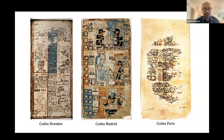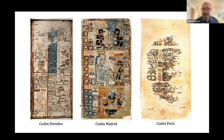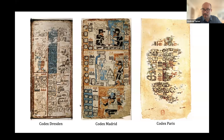Of the three books, the Codex Dresden is probably the finest. It suffered some damage during World War II but contains really complex information about deities, movements of planets — Venus, Mercury, Jupiter, Saturn — and eclipse tables. The Codex Madrid is the longest of the three and deals with astronomical information but also has pages on beekeeping and deer hunting. The Codex Paris is the shortest and in pretty rough condition, though what survives is very finely painted with many hieroglyphs.